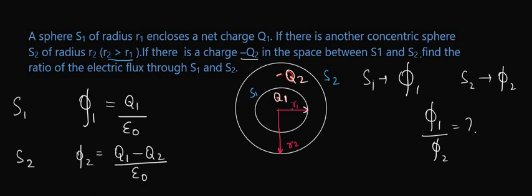Now we can calculate the ratio. Phi 1 by phi 2 will be equal to phi 1, which is Q1 by epsilon 0, then phi 2 will be Q1 minus Q2 by epsilon 0. So Q1 minus Q2 divided by epsilon 0.